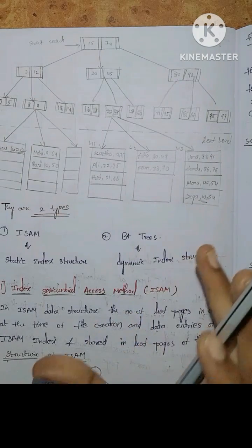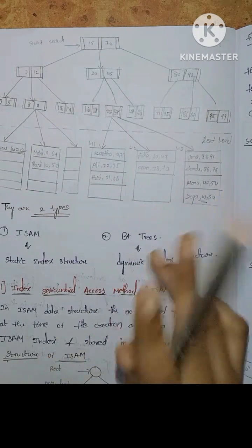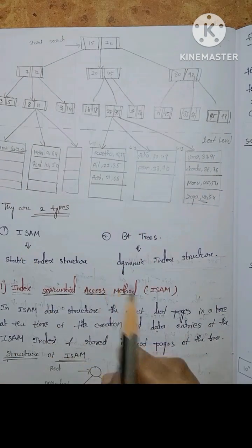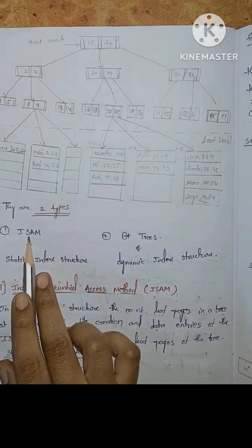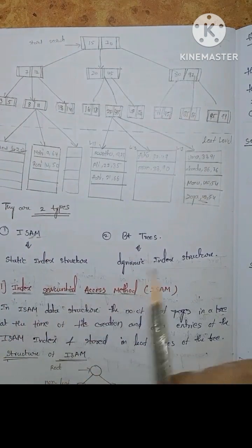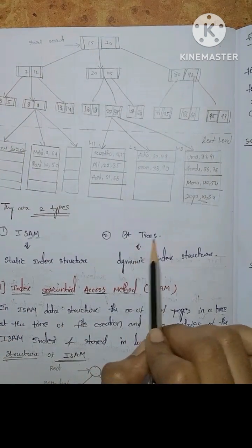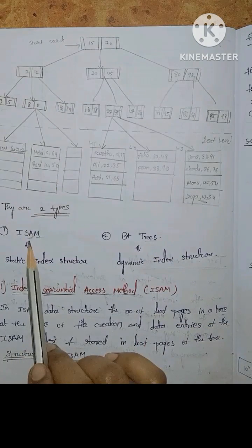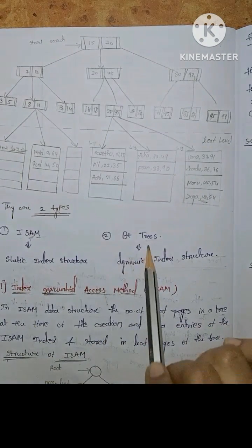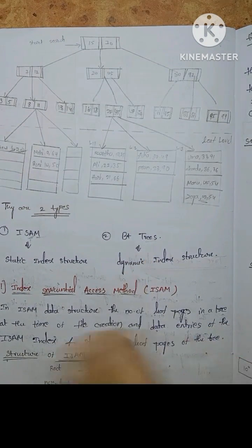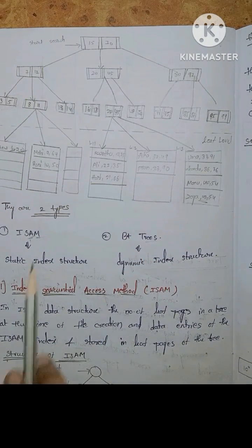Next is ISAM — Index Sequential Access Method. In this, the key is a static index structure. And in the next, the key is a dynamic index structure. The first of these is B+ trees.